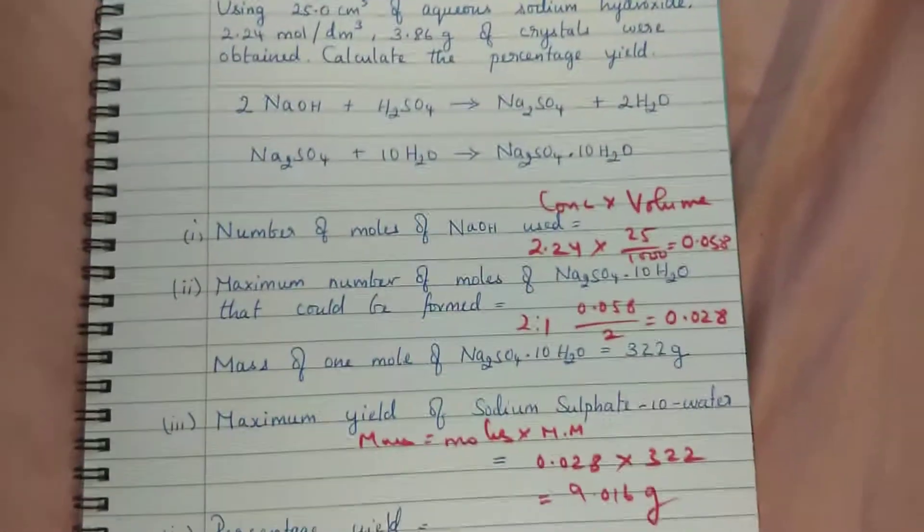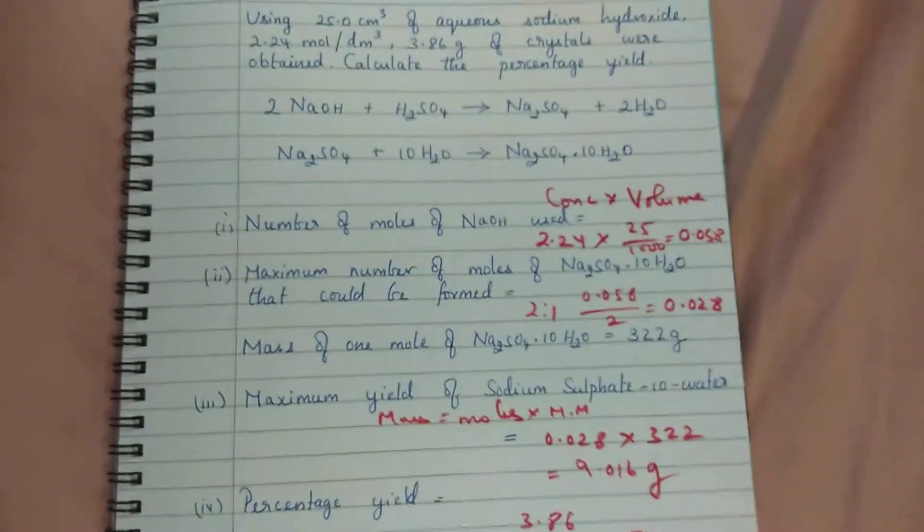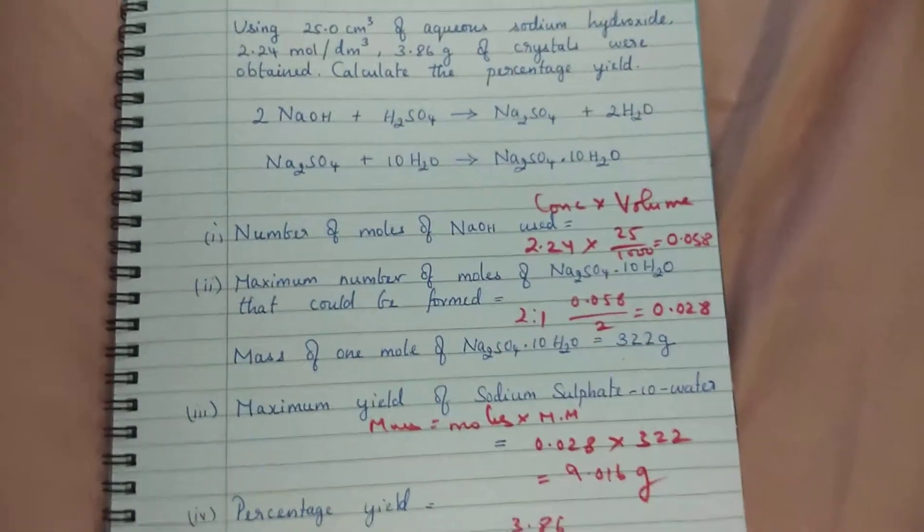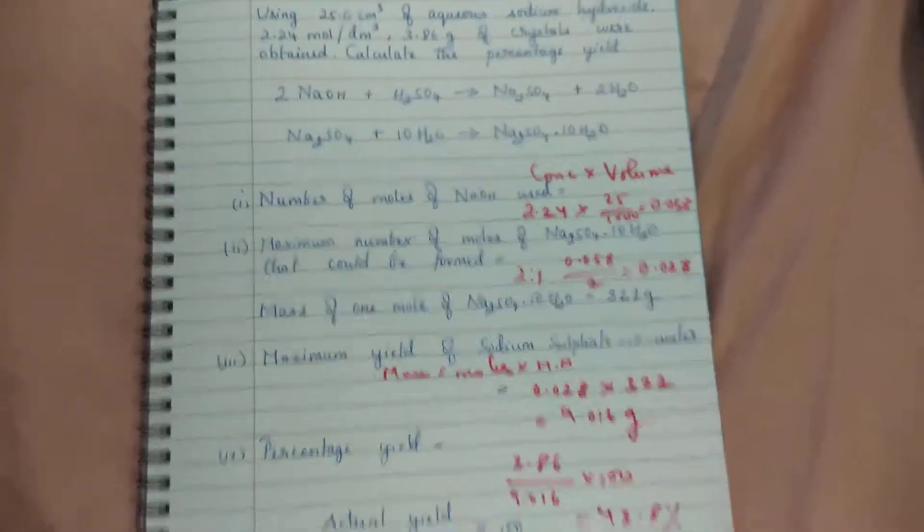The percentage yield is 42.8%. This is how the question might come from the stoichiometry chapter. I think this will be very helpful to you. Thank you so much for watching this video. Bye-bye.